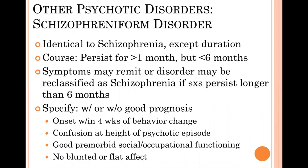Schizophreniform disorder looks exactly the same as schizophrenia — the symptoms are the same, the kinds of behaviors are the same. The only thing that differentiates the two is a shorter duration. The same identical symptoms persist for at least one month, but they end before hitting that six-month period, and because it ends before six months, they cannot meet criteria for schizophrenia.